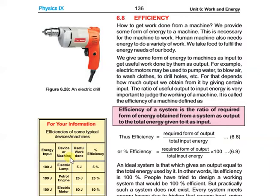First of all, what is efficiency? We often talk about that this person is very efficient, or that the efficiency of this machine is very good. What does efficiency mean in science? Efficiency of a system is the ratio of the required form of energy obtained from a system as output to the total energy given to it as input.